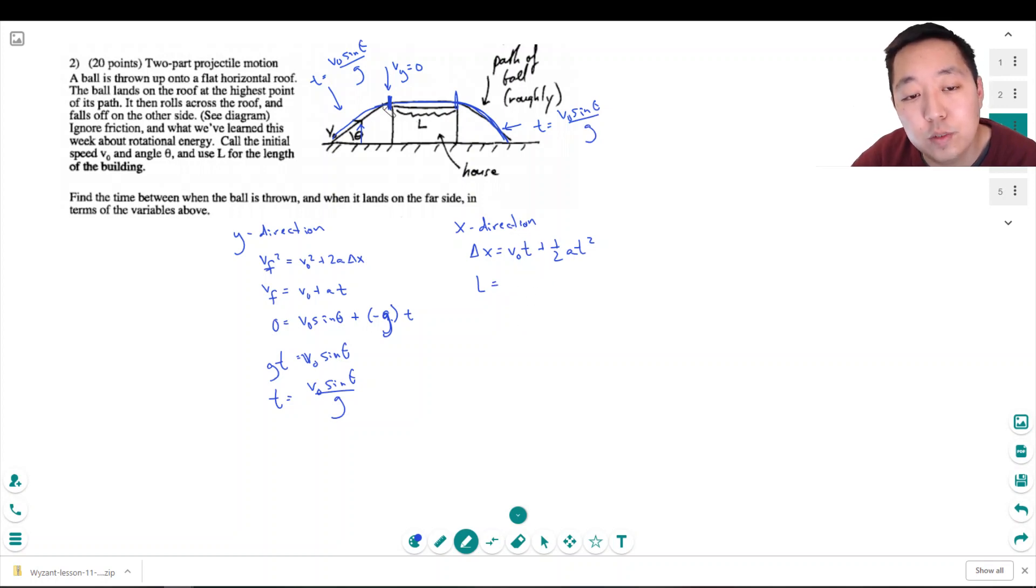V0 t, well, his initial velocity in the x-direction is the same as it was when it started here because there's no acceleration in the x-direction. So this is V0 cos theta times t. And again, because there's no acceleration in the x-direction, this is just plus zero. So I can solve for this time is equal to L over V0 cos theta.